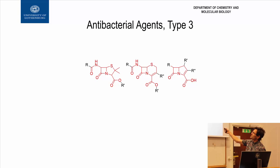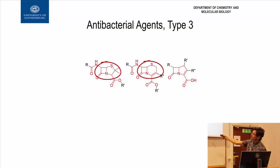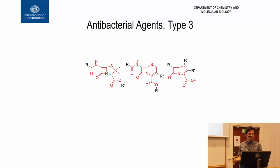The beta-lactams — mechanism type 3 in my earlier figure — all interfere with cell wall synthesis in bacteria. If you look at them, they look pretty similar because all have a four-membered ring fused to either a five- or six-membered ring. Again, the R groups sitting on these cores are important for how the drug acts, how it travels, its toxicity, what bacteria it attacks, and its potency.